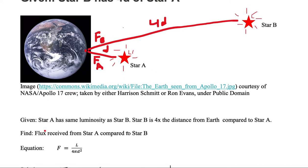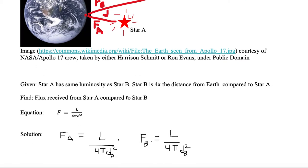The generic equation for flux is F equals L divided by 4πd². So the flux of A equals the luminosity L—we don't have to put an A here because it's the same luminosity as B—